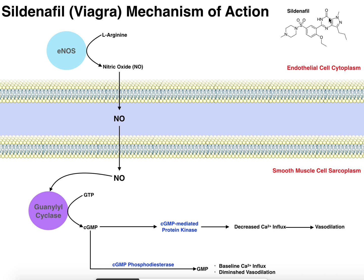Viagra was originally marketed as a vasodilator for people who had different kinds of heart disease and cardiovascular disease. If you have a general vasculature that's too constricted, that's going to cause elevated blood pressure. So sildenafil was originally marketed to act as a vasodilator — increasing the diameter of blood vessels decreases blood pressure and decreases the overall cardiovascular load, and that's how it promotes its healthy effects.